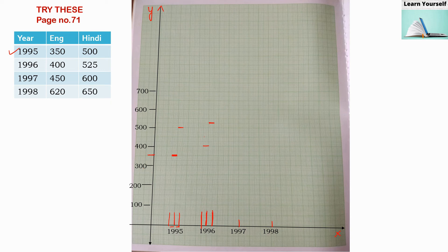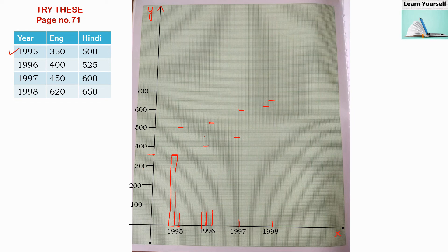For 1997, English is at 600. For 1998, English is at 620 — somewhat less than 625 — and Hindi is at 650. I draw lines down to complete each bar. For each year I take 5 columns towards the left for English and 5 columns towards the right for Hindi, and draw the bars down to the x-axis.